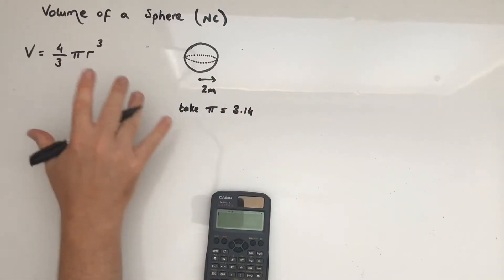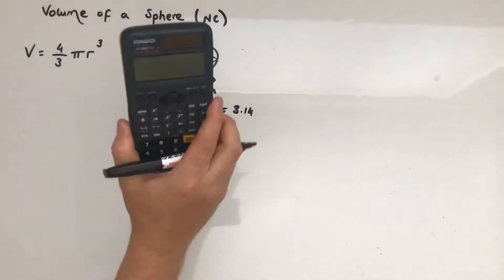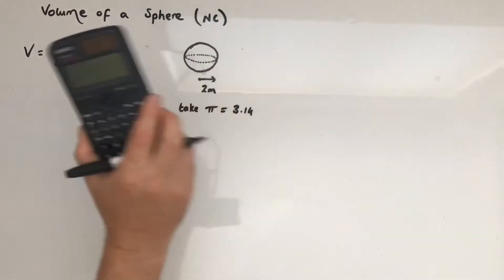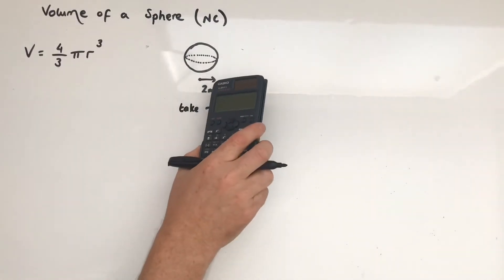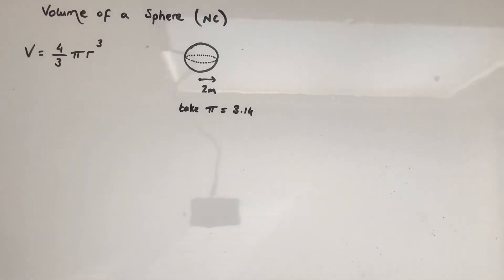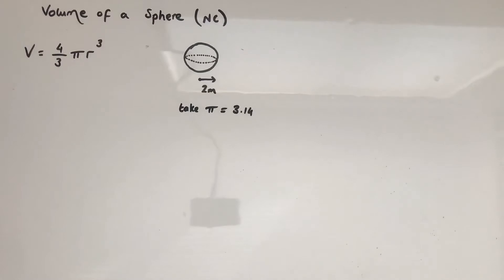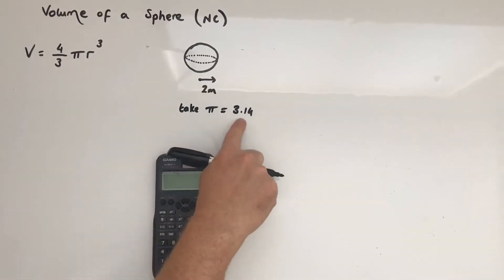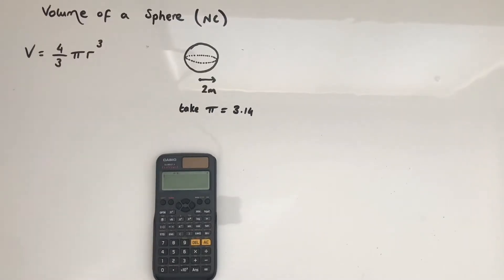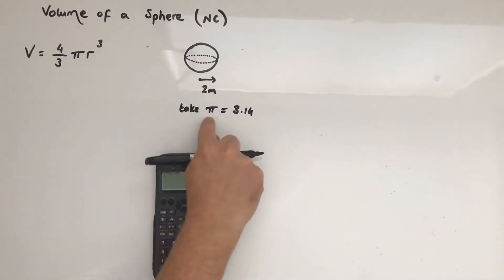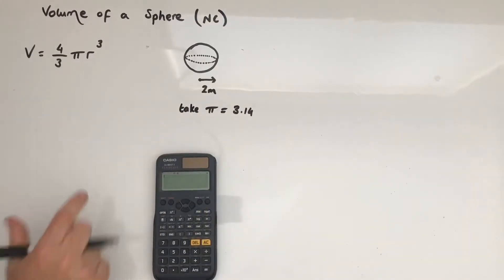We're going to see this unravel into something numerically challenging. We don't need this until the end. Because we're rounding pi here, we don't want to do any early rounding throughout this question, because that will have an impact on the overall answer. We've already been asked to round pi to 3.14 — we don't want to round it any further until the end.